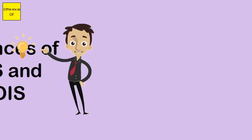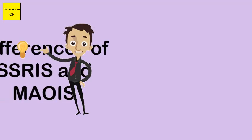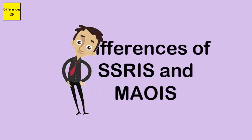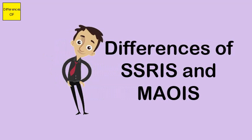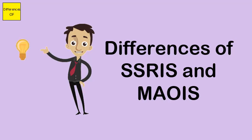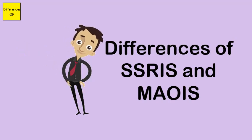Difference between SSRIs and MAOIs. SSRI stands for Selective Serotonin Reuptake Inhibitor. MAOI stands for Monoamine Oxidase Inhibitor.